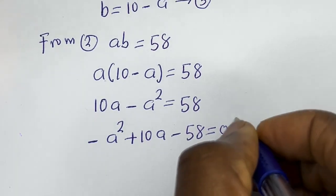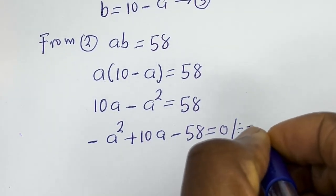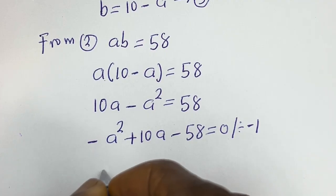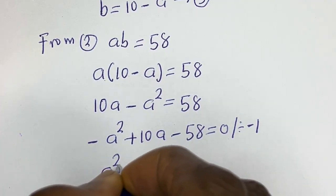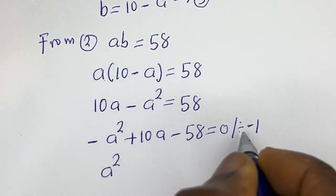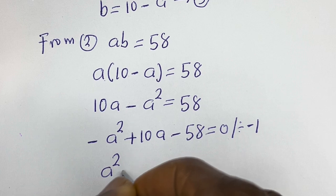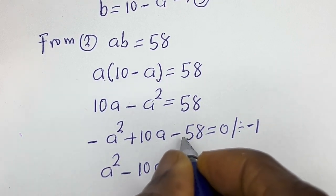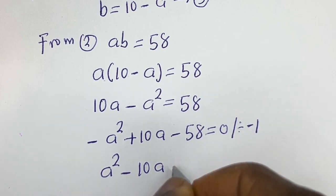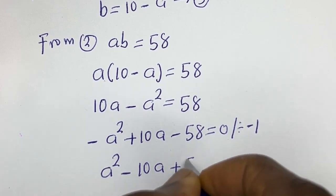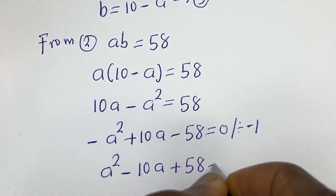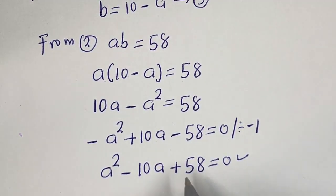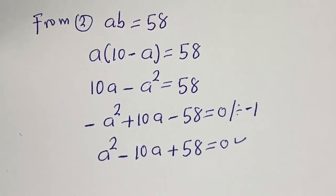Now let's divide all terms by minus 1: minus a squared divided by minus 1 gives a squared, 10a divided by minus 1 gives minus 10a, and minus 58 divided by minus 1 gives plus 58, so we have a squared minus 10a plus 58 is equal to 0. This is a quadratic equation, so let's use the quadratic general formula.